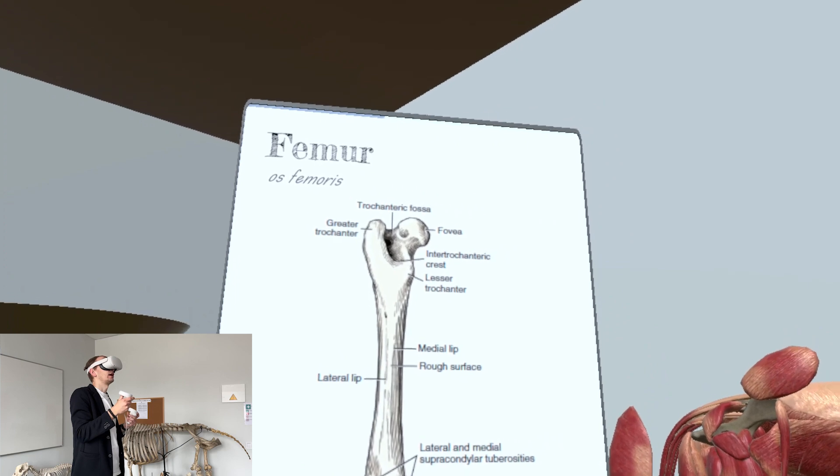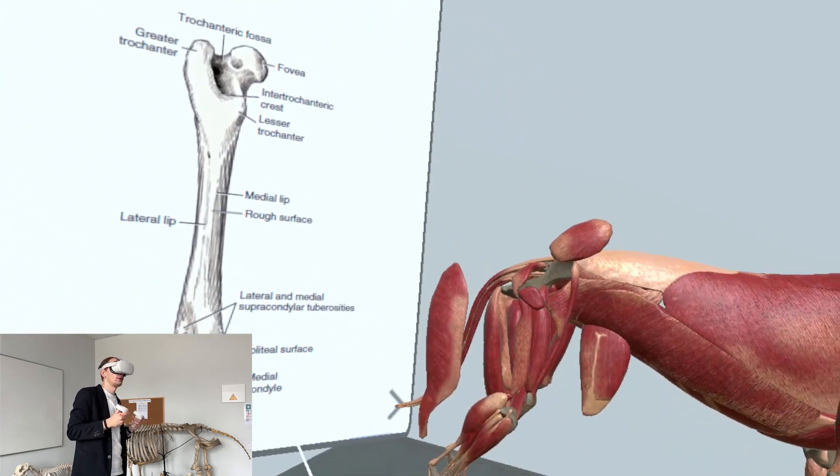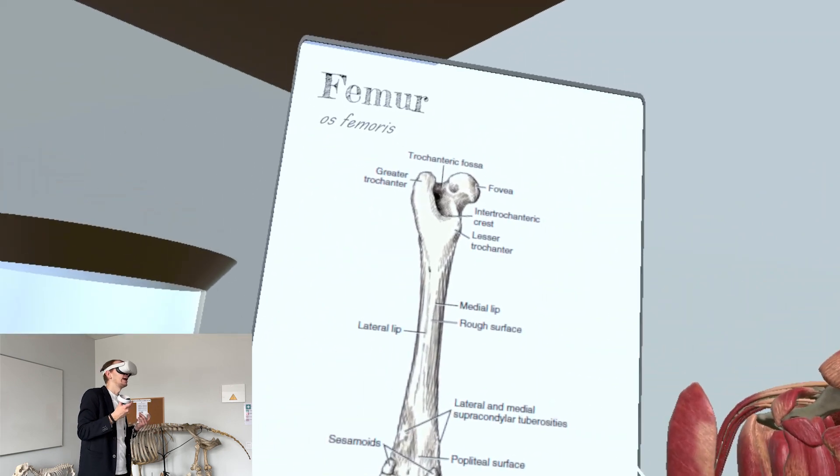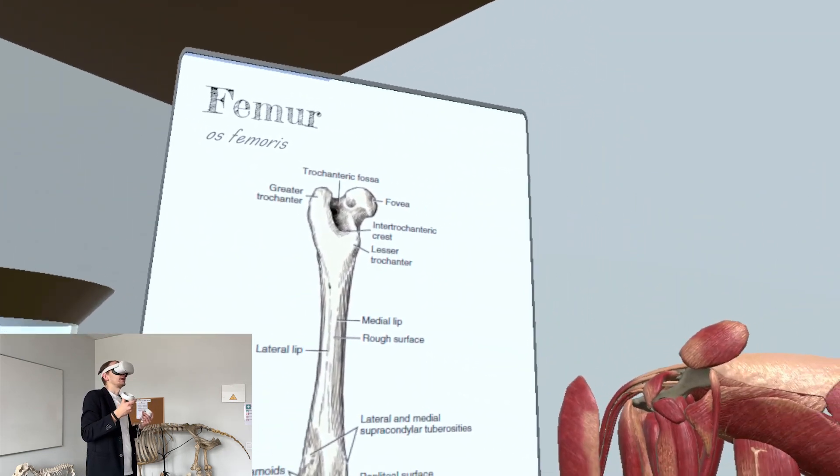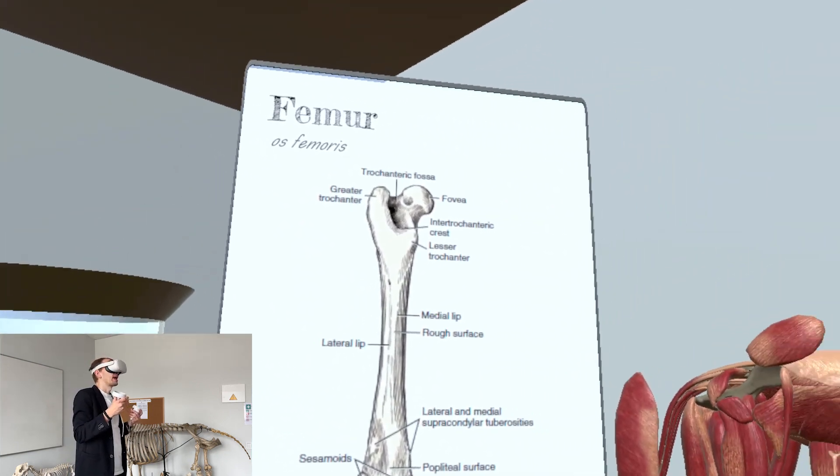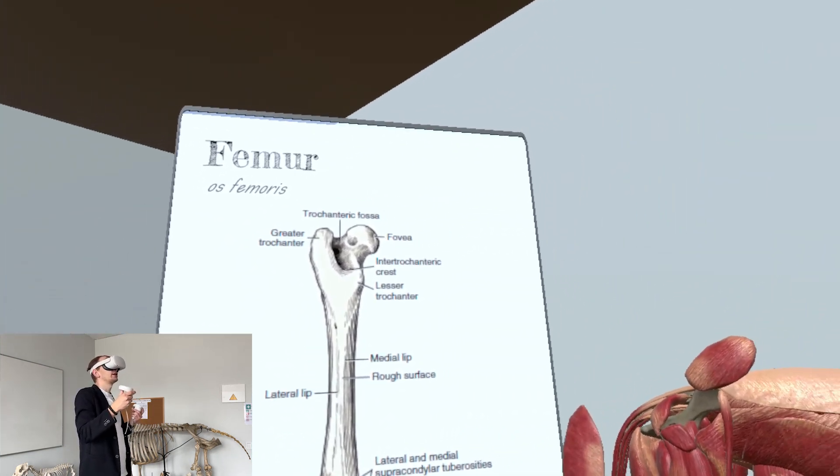We need to understand where the greater trochanter is located. By knowing the greater trochanter, we can actually feel it on the animal, and that's the very important marker for where to make the incision itself.